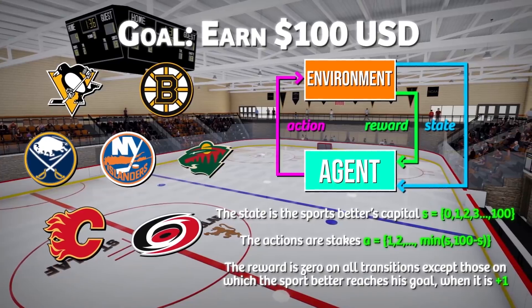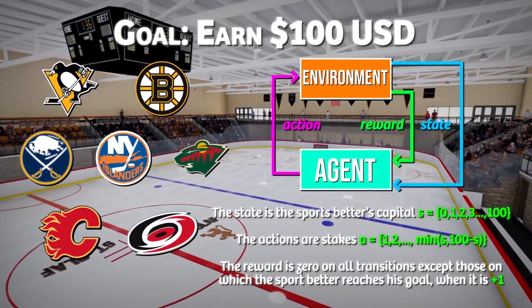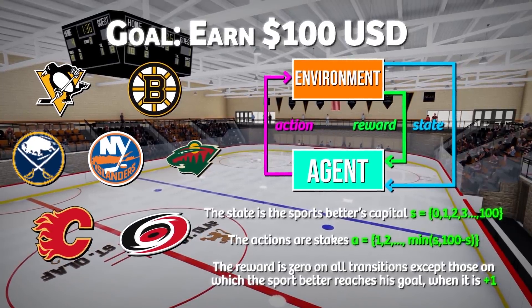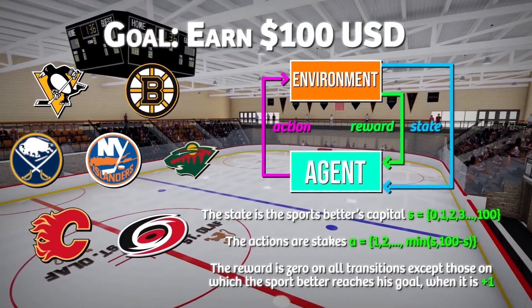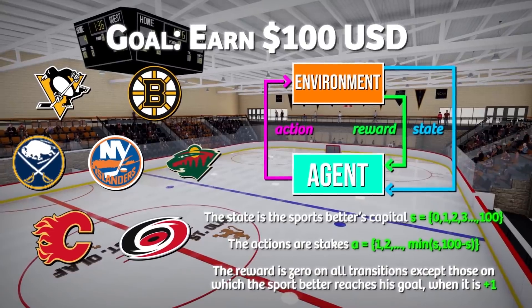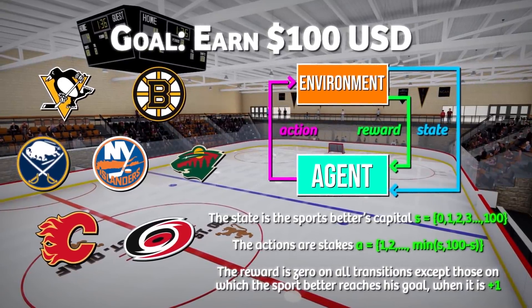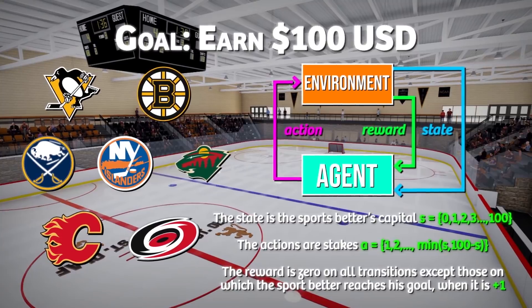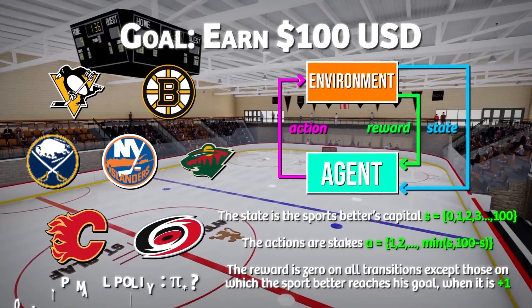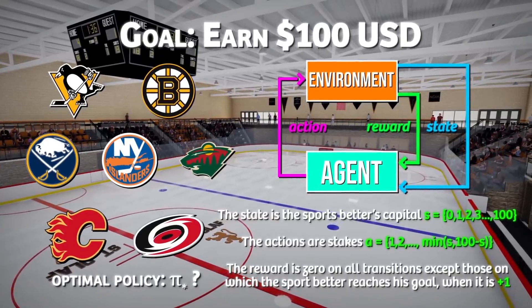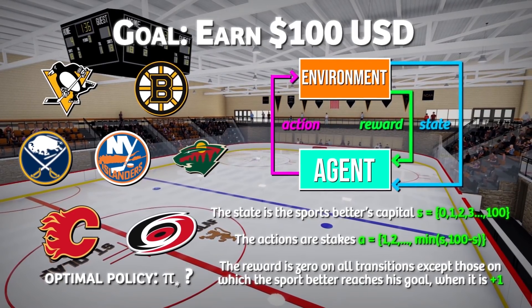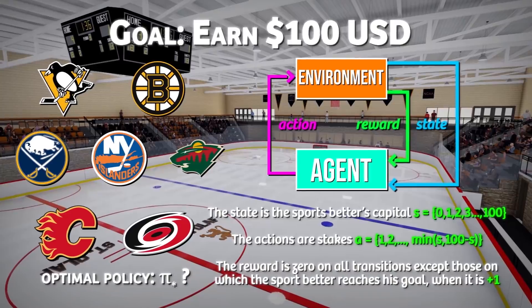In the context of reinforcement learning, we can consider this a Markov decision process. The state would be how much money we have at any given point. The actions are the stakes or bets that we would place. The reward is going to be zero on all transitions except those in which we reach our goal — then it's plus one. What we'll want to learn is an optimal policy, which will be a mapping between levels of capital and how much we should bet.